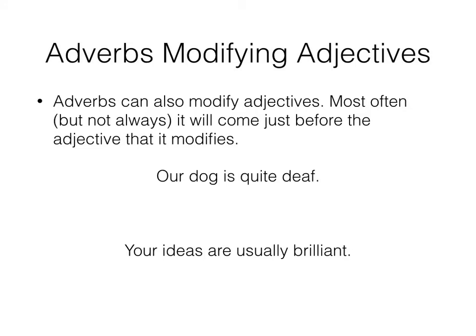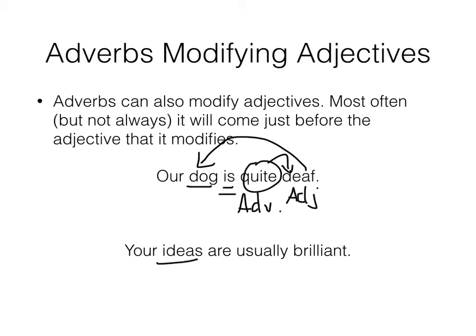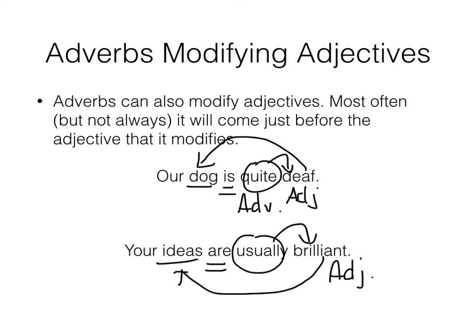Adverbs can also modify adjectives. Most often, but not always, the adverb will come just before the adjective it modifies. For example: 'Our dog is quite deaf.' Deaf describes dog, making deaf an adjective. Quite is telling how deaf he is, so quite is the adverb because it's describing an adjective. Similarly, 'Your ideas are usually brilliant.' Brilliant tells about ideas, so brilliant is an adjective. Usually is describing brilliant — how often are they brilliant? Usually. Therefore, usually is an adverb.